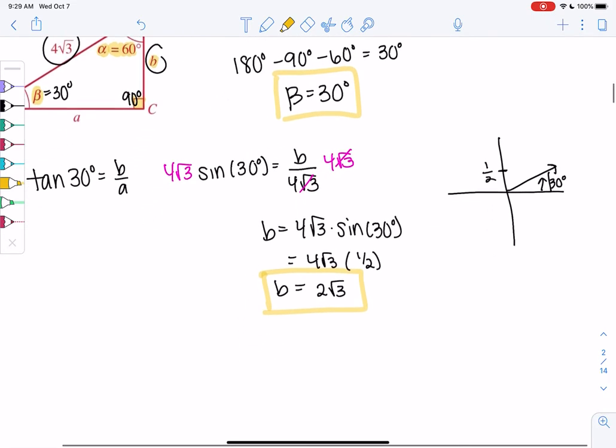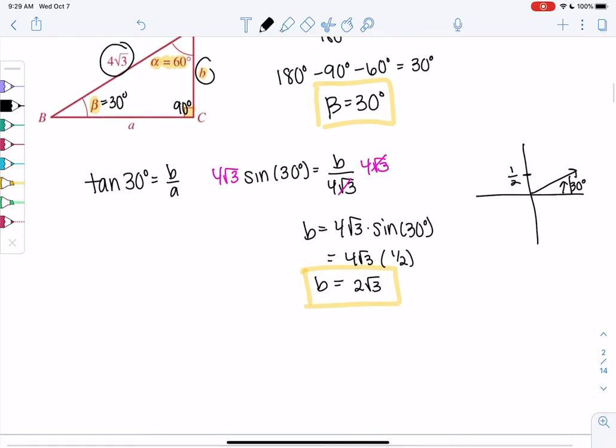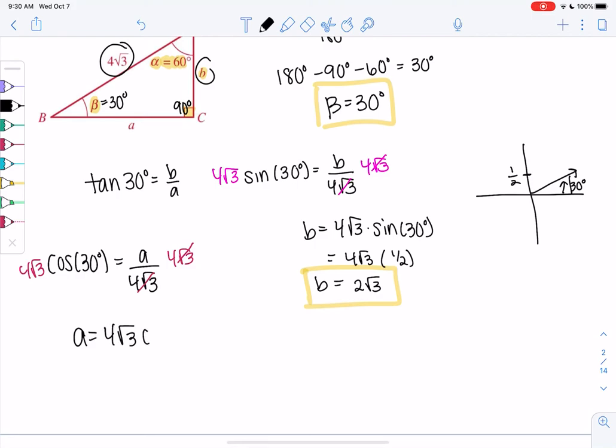And then I guess we can use cosine to find A. So cosine of 30 is A over 4 root 3. We multiply by 4 root 3 again. They cancel out. So A is 4 root 3 times cosine 30. We already drew 30 degrees. Cosine is the horizontal or the X. That would be root 3 over 2, because it's the long side.